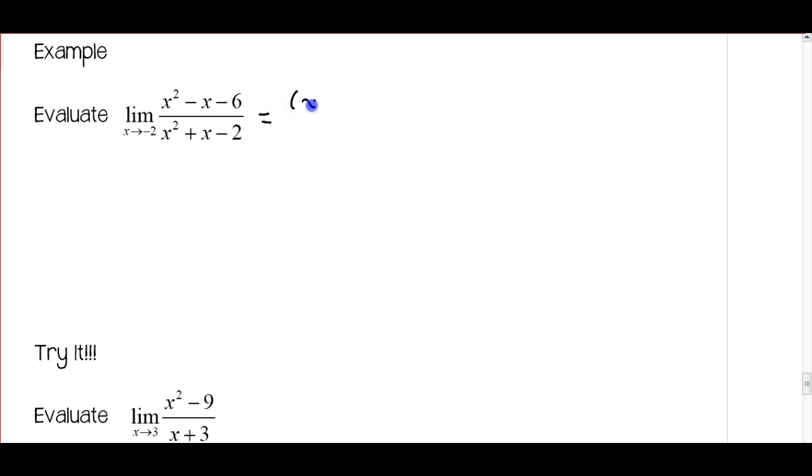So the numerator is going to factor to x minus three times x plus two. And the denominator is going to factor to x plus two times x minus one. And we have a common term, so we're going to cancel those out.